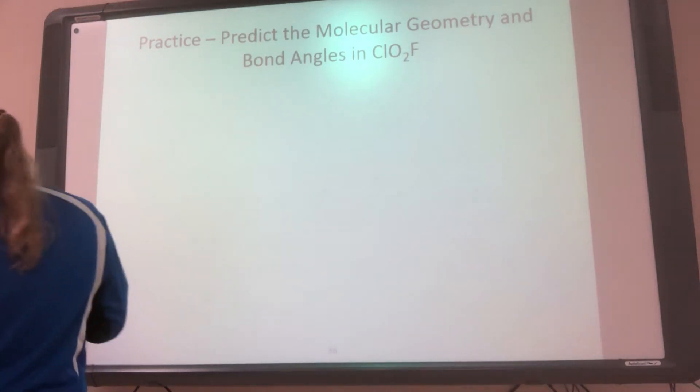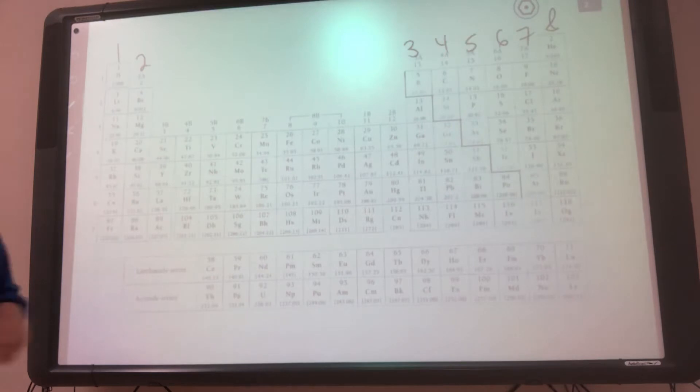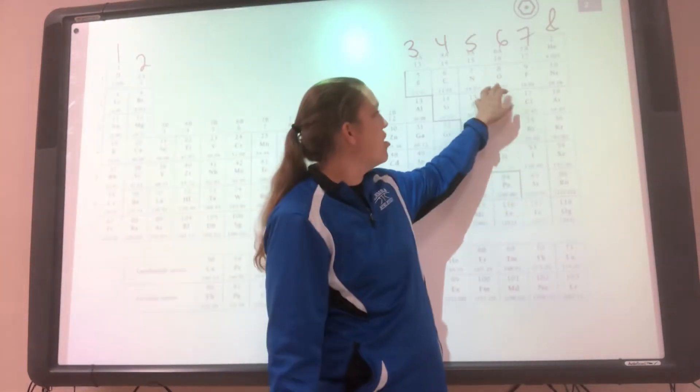Alright, so let's do another example. Predict the molecular geometry and bond angles in ClO2F. So we need to know who's least electronegative. So we've got Cl, O, and F.